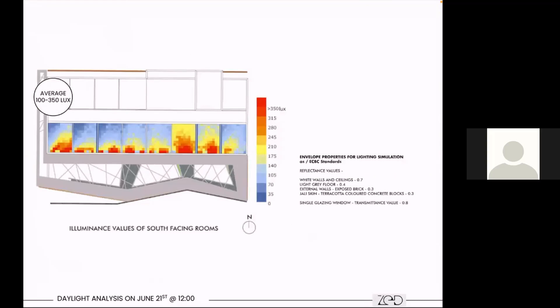This is the daylighting analysis showing that even on the worst day — the brightest day, June 21st, when sun and heat are highest — because of the transition space, the amount of daylighting in the rooms never exceeded 350 lux. Hence there was no glare in the rooms and no overheating on the south-facing rooms. The north was automatically having better performance with respect to thermal comfort and daylighting as well.